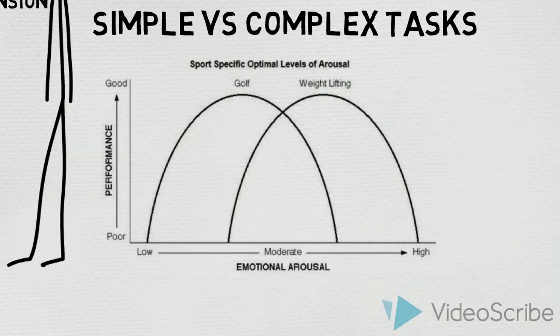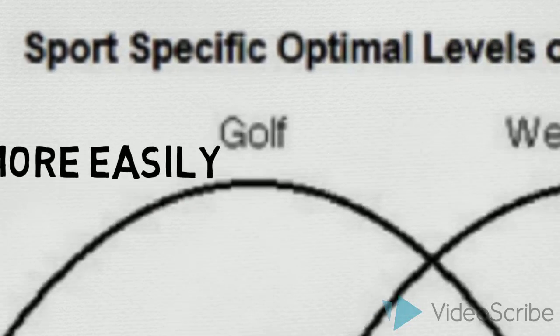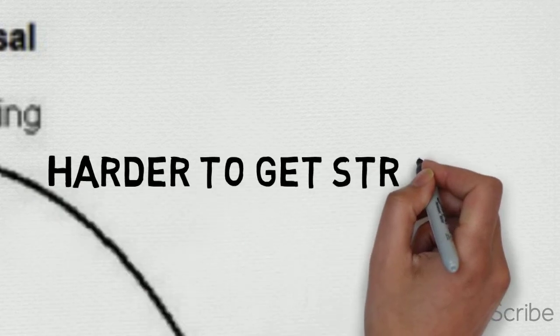For example, if the task is complex, requiring fine motor skills, such as in a game of golf, then the optimum level of arousal is low. In contrast, if the task is relatively simple, requiring gross motor skills, such as weight lifting, then the optimum level of arousal is much higher.